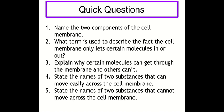Question three: explain why certain molecules can get through the cell membrane and others can't — because some molecules are small enough to easily pass through, whereas other molecules are too large. Question four: name two substances that can move easily across the cell membrane — any two of carbon dioxide, oxygen, glucose, or water. Question five: name two substances that cannot move across the cell membrane — sucrose or starch. There are others beyond these examples.